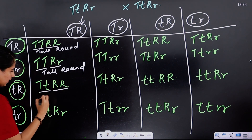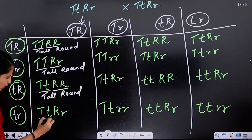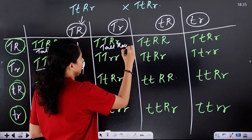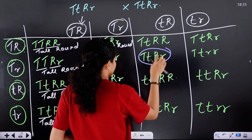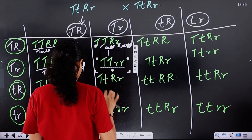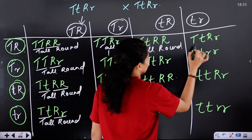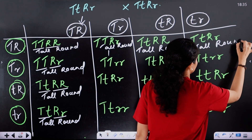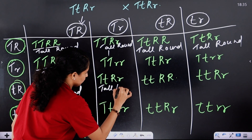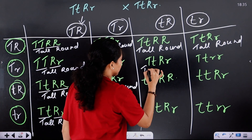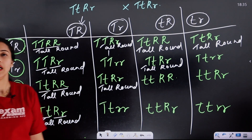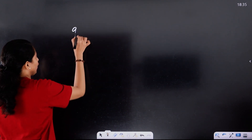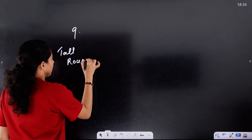Looking at the Punnett square results, we can identify the phenotypic classes. Tall and round is one phenotypic class. Counting the tall and round combinations: 1, 2, 3, 4, 5, 6, 7, 8, 9 — this is a parental character combination.